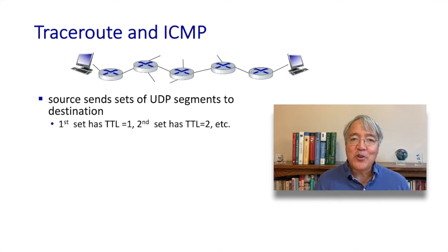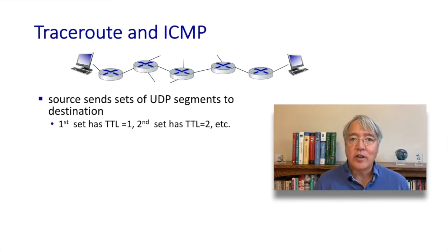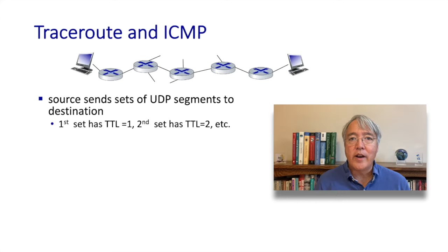With this as background, you can probably already figure out how traceroute works. Traceroute works by sending a set — usually three — UDP datagrams towards a destination. The first set is sent with an IP TTL field value of one, the second set with a TTL of two, the third with a TTL of three, and so on.